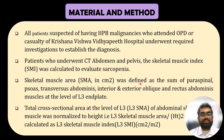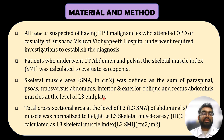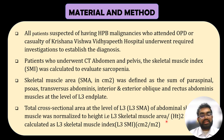Skeletal muscle area was defined as the sum of paraspinal, psoas, transverse abdominis, internal and external oblique, and rectus abdominis muscles at the level of L3. Total cross-sectional area at the level of L3 of abdominal skeletal muscle was normalized to height — that is, skeletal muscle area at L3 divided by height squared — calculated as the L3 skeletal muscle index.